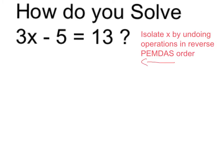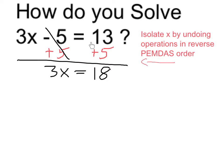Reversing my normal order of operations, I'm going to start by eliminating the 5 by adding 5 to each side. On the left it cancels, on the right I get 18.